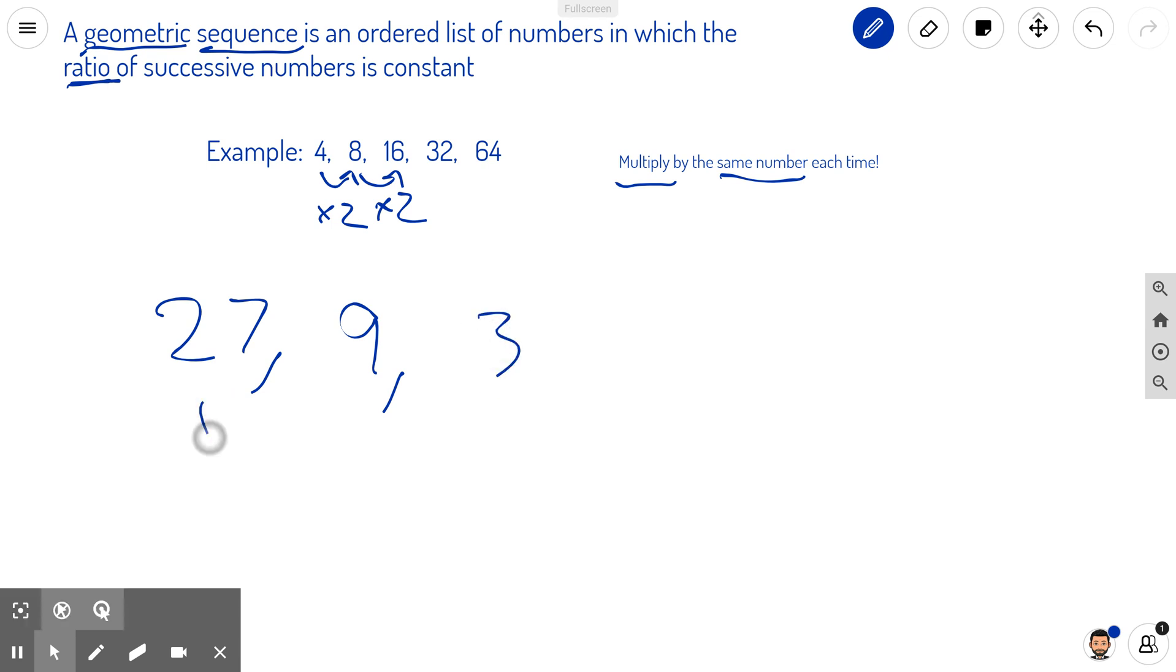What you're effectively doing here is simply multiplying by 1/3 each time. 27 times 1/3 is 9, and 9 times 1/3 is 3. And then the next term will be 1 and 1/3, etc.